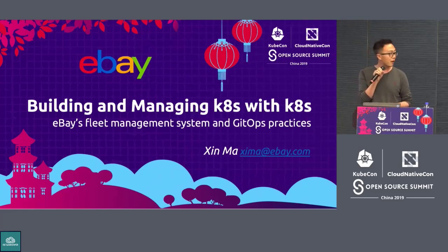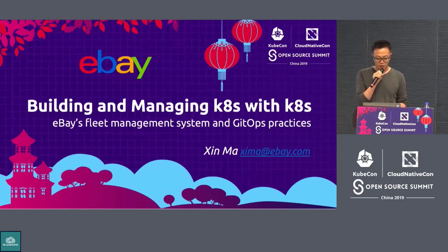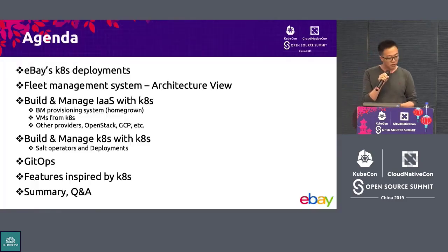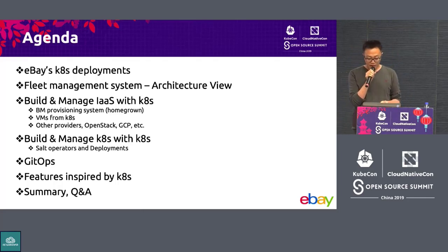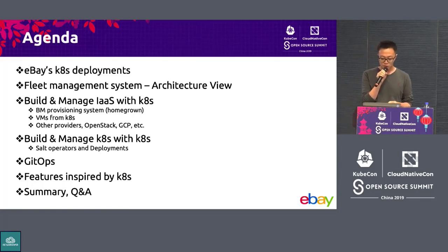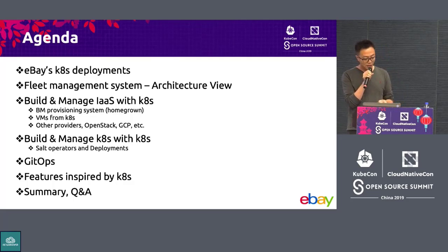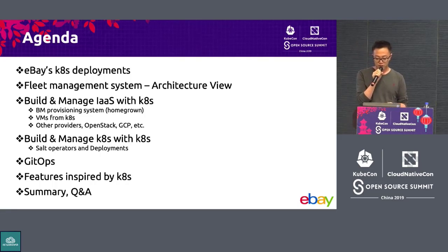Today, I'm going to talk about how we view and manage Kubernetes with Kubernetes, which is basically eBay's management system and the way we run our private cloud with Kubernetes. I'll give a quick introduction on eBay's Kubernetes deployments, then introduce our fleet management system based on Kubernetes that views and runs our private cloud. In a deeper dive, I'll walk through how we manage IaaS with Kubernetes — compute providers, eBay's Kubernetes clusters with our Salt operators and controllers. And finally, I'll share our GitOps practices and cool features inspired by Kubernetes.